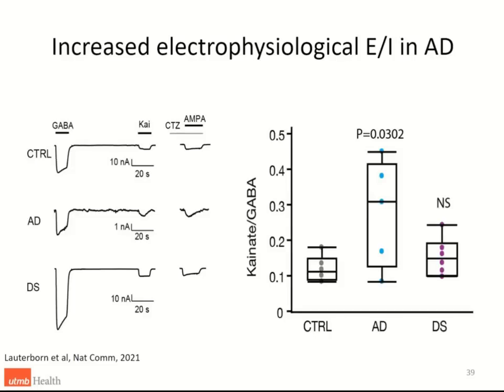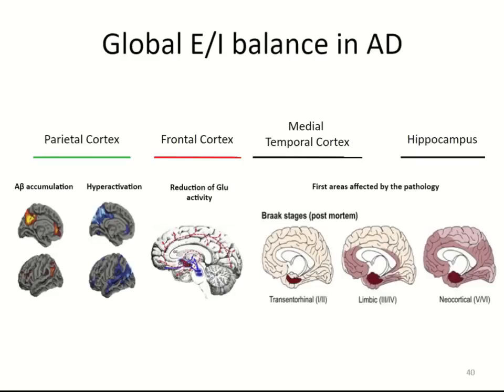By directly measuring responses in control — showing GABA, kainate, and AMPA plus cyclothiazide — in Alzheimer's disease the responses are smaller. In Down syndrome, responses are very strong, sometimes larger than controls. All responses are highly correlated: if you have an increase in GABA, you also have an increase in kainate. When we take the ratio, there is very small variation in controls and Down syndrome, but in Alzheimer's disease we have a significantly increased ratio — in line with the fluorescent deconvolution tomography.